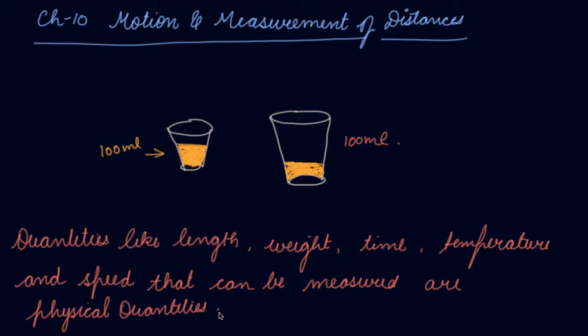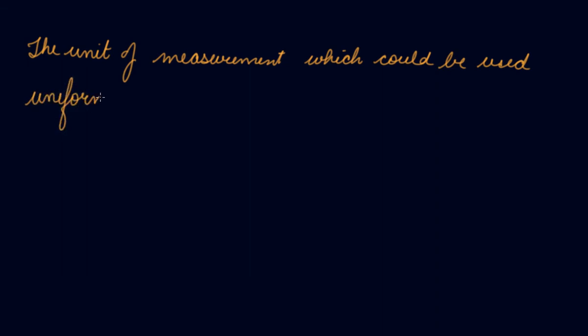So quantities like length, weight, time, temperature, and speed can be measured. These are known as physical quantities. Now, the unit of measurement which could be used uniformly by everyone - such a unit is called a standard unit.